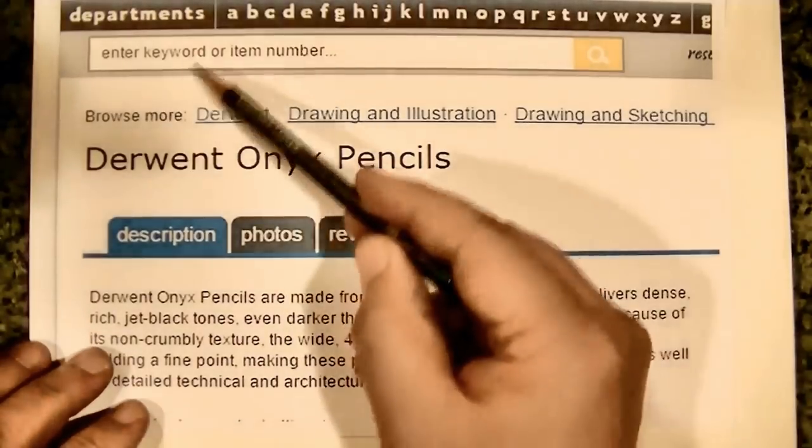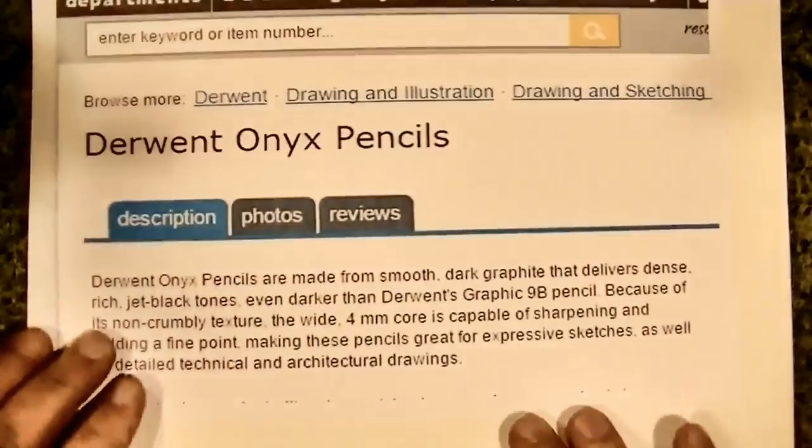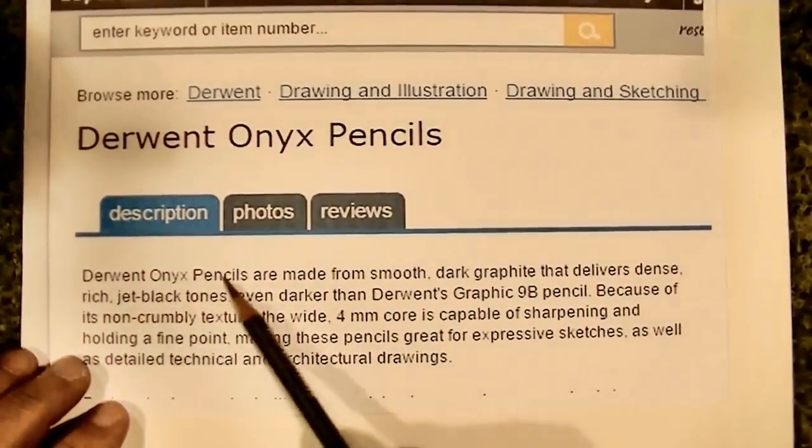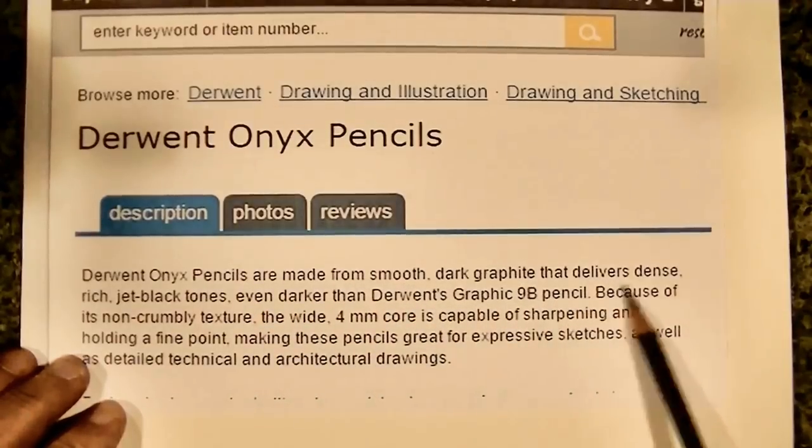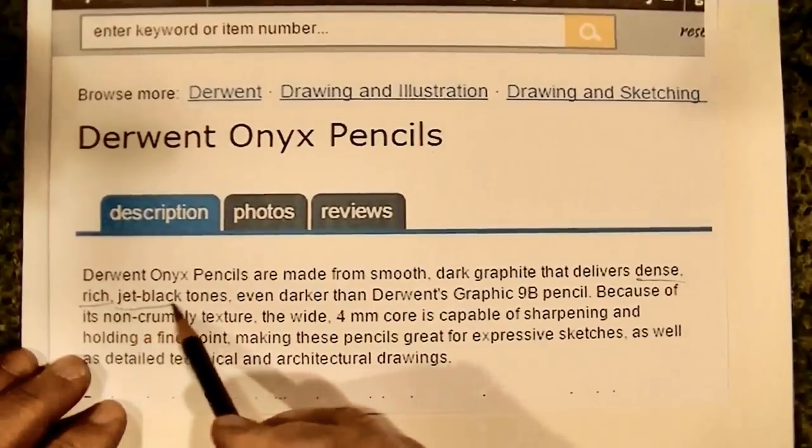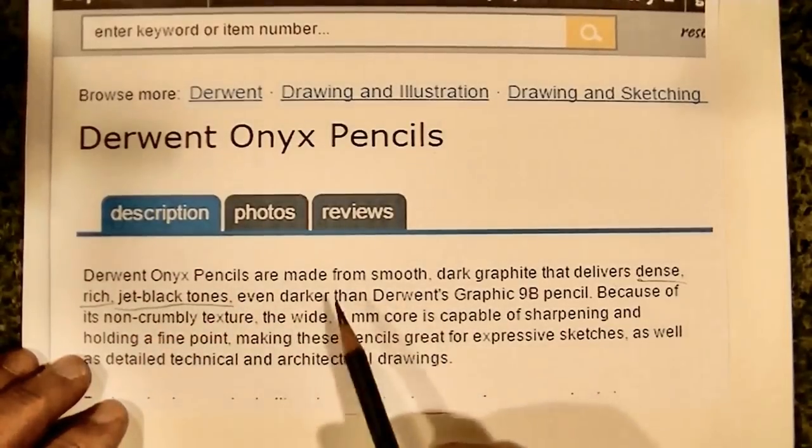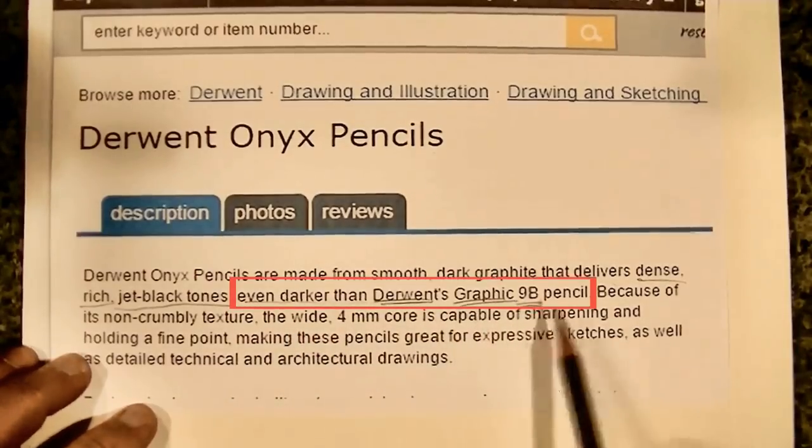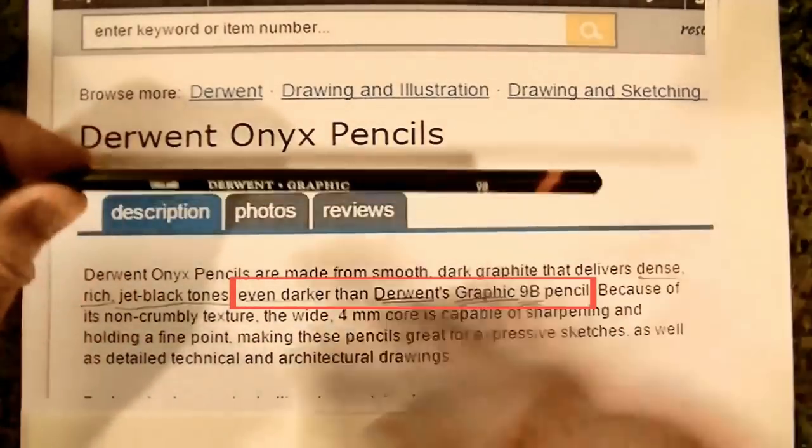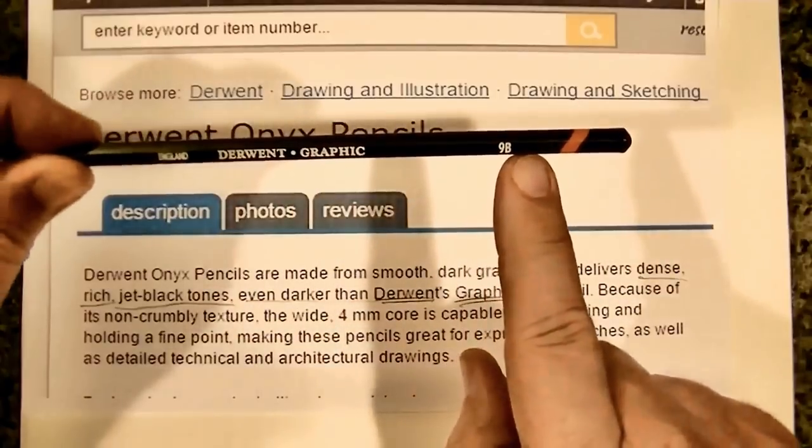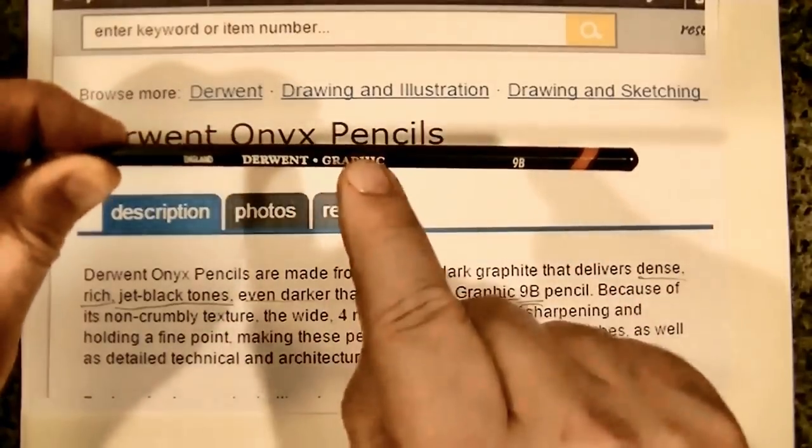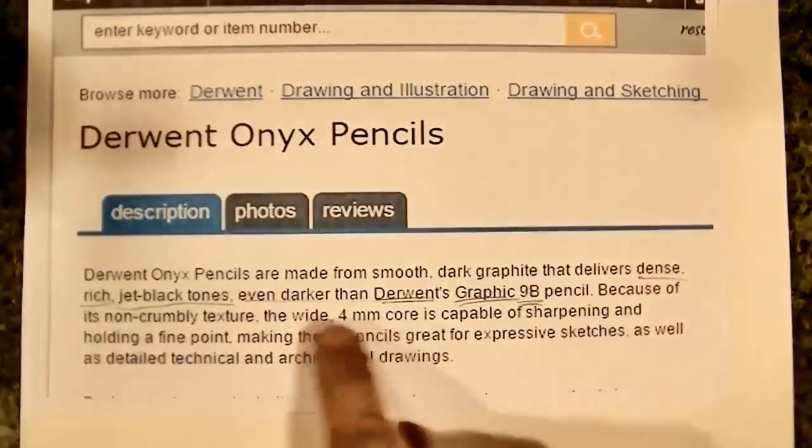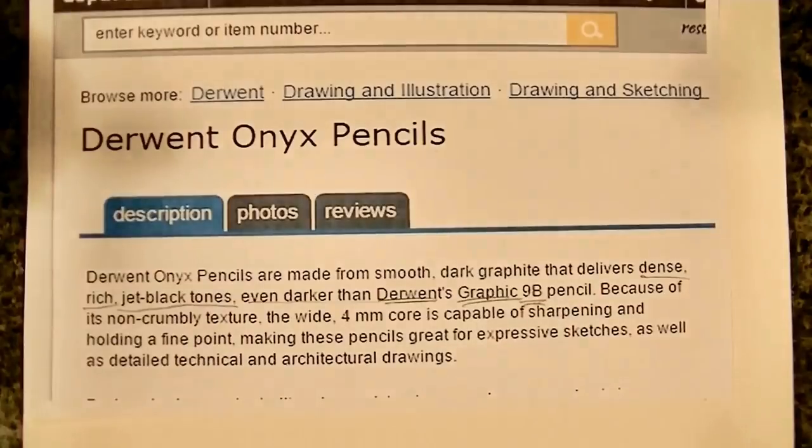This is not on drawing itself but on these pencils. Note what it says here on the Blick website. This is where I bought my pencils, by the way. It says that Derwent Onyx pencils are made from smooth, dark graphite that delivers dense, rich jet black tones. And I want you to note this part here: even darker than Derwent's graphite 9B. Okay, that's this pencil. This is a Derwent graphic 9B.